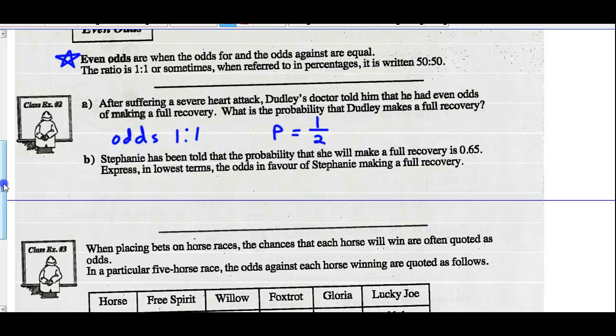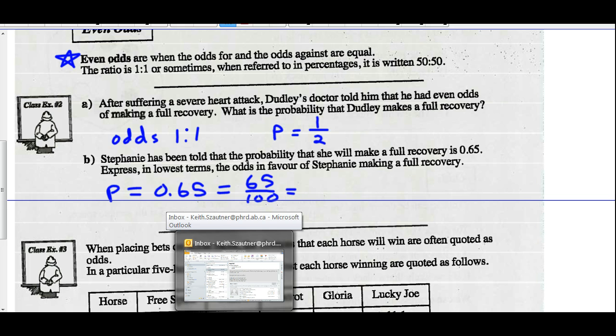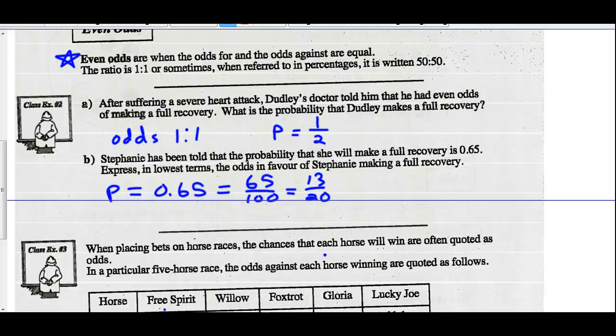Stephanie's been told that the probability that she will make a full recovery is 0.65. Express in lowest terms the odds in favor of Stephanie making a full recovery. So we're told the probability is equal to 0.65. If I change that into a fraction, that's 65 over 100, or in lowest terms. So the odds of 65 over 100, that would be in lowest terms, divide everything by 5, you get 13 out of 20. So our probability is 13 out of 20. What are our odds, then? So the odds of her making a full recovery, 13 favorable, 7 not. So her odds would be 13 to 7. And that's what the question's asking for. Odds would equal 13 to 7. That's a part-part ratio.